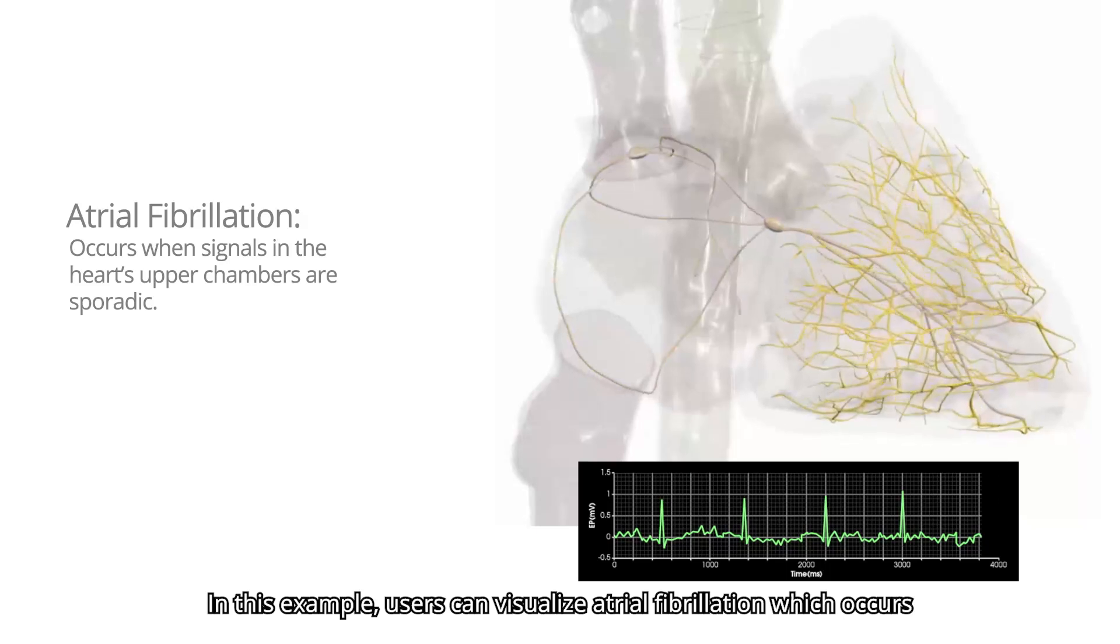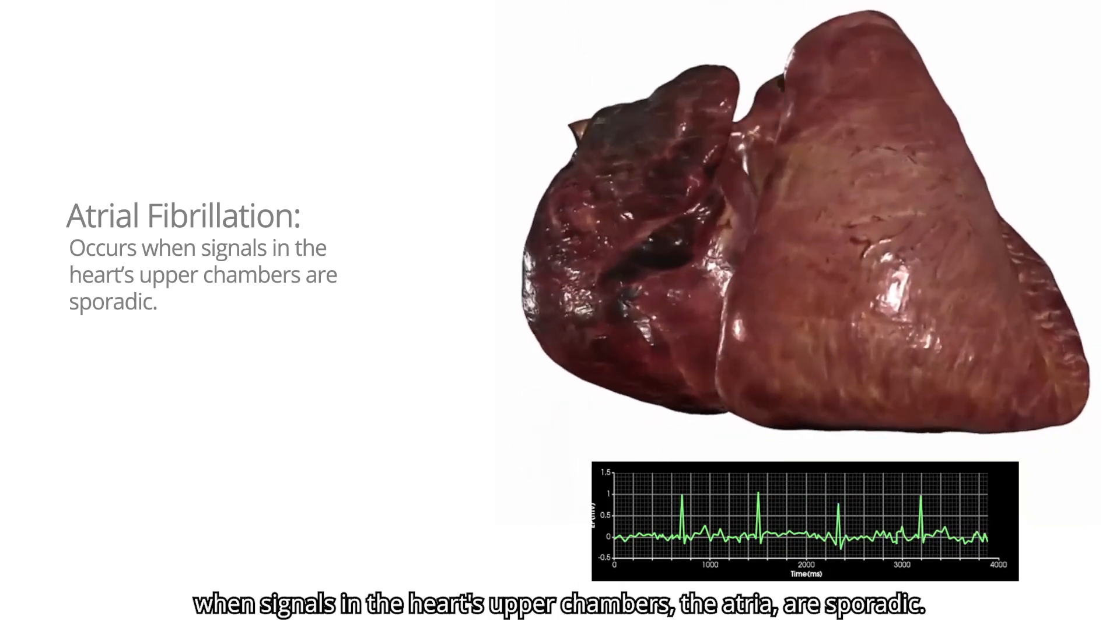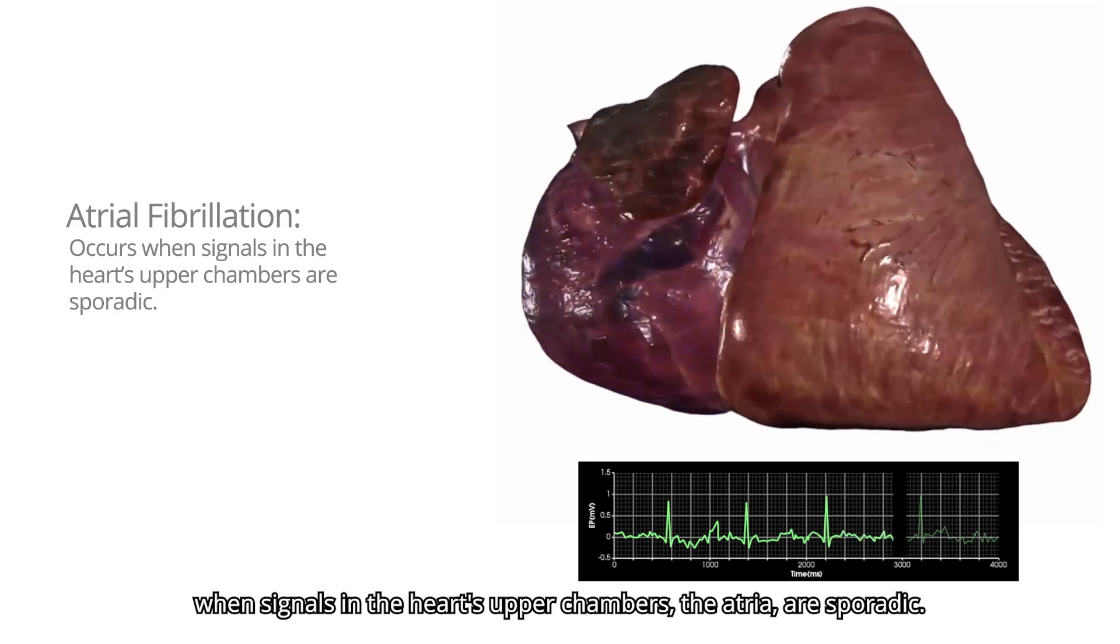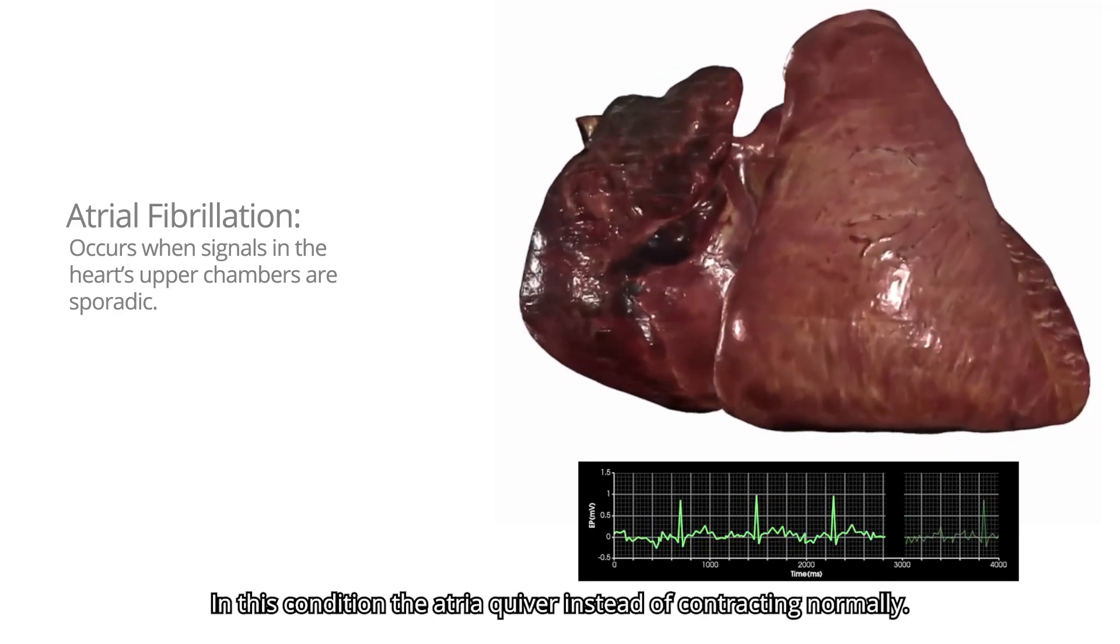In this example, users can visualize atrial fibrillation, which occurs when signals in the heart's upper chambers, the atria, are sporadic. In this condition, the atria quiver instead of contracting normally.